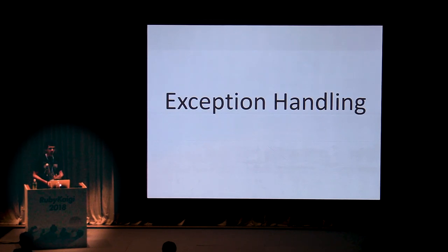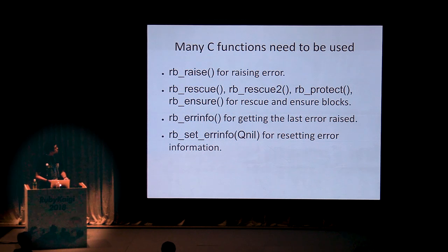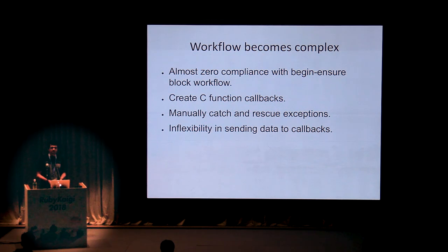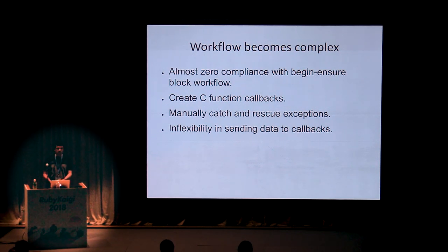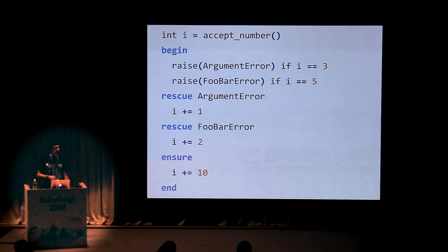Exception handling is also a very problematic case with C extensions. Previously, when you had to write exception handling code in C extensions, you had to call many C functions — rb_raise for raising the error, then rescue and protect methods for the rescue and ensure blocks, and then you had to manually fetch the error using rb_errinfo, which is also a pain. This causes the workflow of error handling in C extensions to be very complex, with almost zero compliance with the begin/rescue/ensure block workflow we are all used to in Ruby. Rubex allows you to define this using a very simple Ruby-like syntax — you just specify a begin block the way you do in Ruby, and whatever code you specify inside will be automatically put inside the relevant C methods required for this purpose.